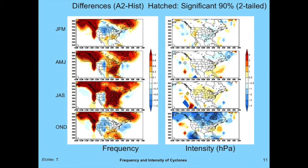With the storm tracks, there's no law that says I can't pick up tropical systems — I don't differentiate mid-latitude from tropical, I'm just looking at lowest pressure. Looking at A2 minus historical for the fall, you're seeing an increase in storms across the western Caribbean and Gulf of Mexico, with an increase in intensity down across the western Caribbean. Across the Pacific too, there's increased intensity in A2 relative to historical off Mexico, suggesting more tropical development in the A2 scenario.